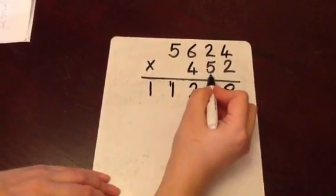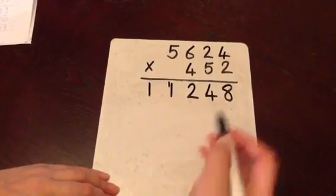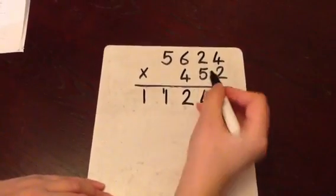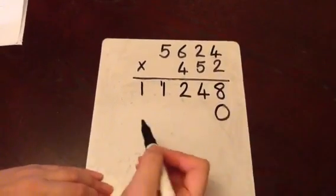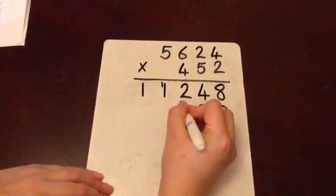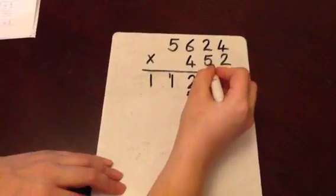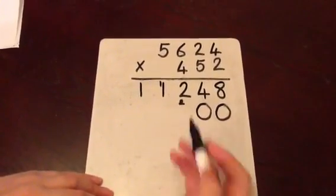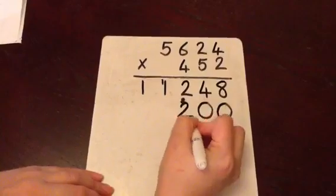Now we're multiplying by 10s we can add a 0 into the units column. 5 multiplied by 4 is 20. The 0 in the column and carry the 2 across. 5 multiplied by 2 is 10 and the 2 we've carried makes 12 carrying the 1 across.